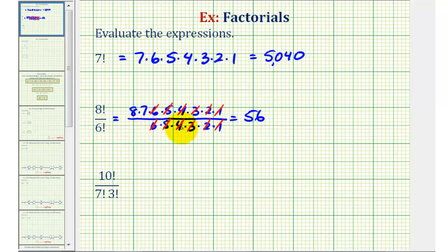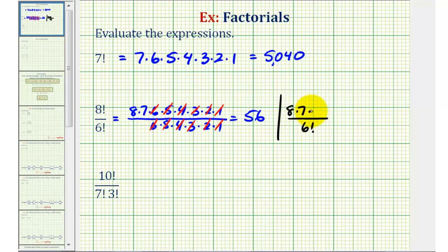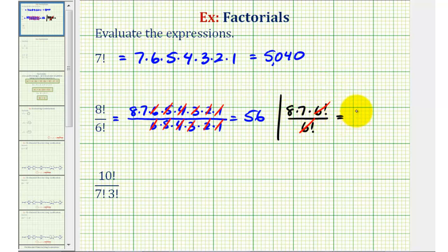Another way to get the same result with less work is to recognize that if our denominator is six factorial and the numerator is eight factorial, we can write eight factorial as eight times seven times six factorial. In this form, six factorial over six factorial simplifies to one, giving us the same result of eight times seven, or 56.